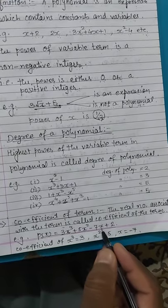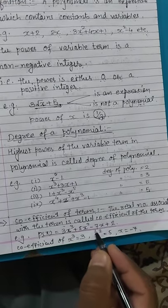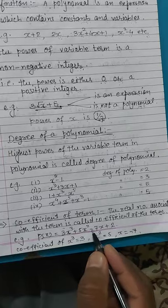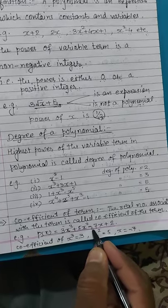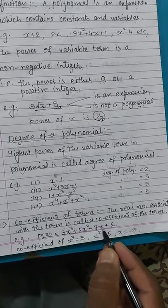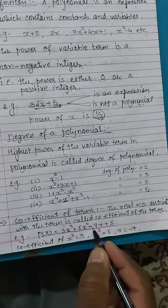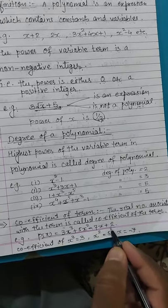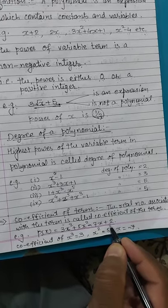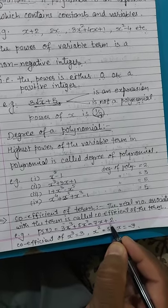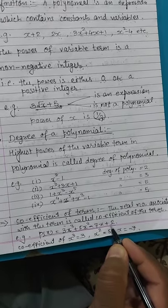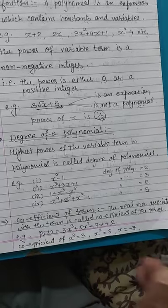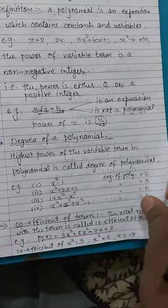The coefficient of x is minus 7 — you must take the sign into account, so the coefficient of x is minus 7. And 2 is considered the constant term here.